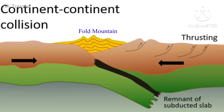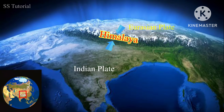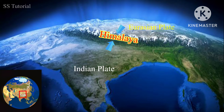If convergence occurs between two continental crusts, the comparatively denser plate is subducted under the lighter plate, and the deposited materials between them get folded and form fold mountains. Here, volcanic eruption does not occur. The Himalayan fold mountains formed due to the convergence of two continental crusts: the Indian plate and the Eurasian plate.